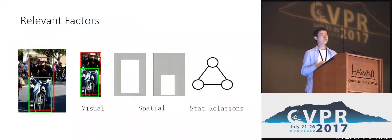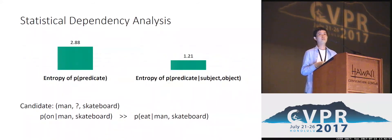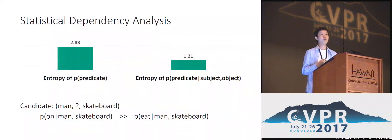In joint recognition, we use three factors. The first factor is the visual appearance, which is the enclosed sub-region of the two objects in the original image. The second factor is the spatial cues, which means the relative locations of the two objects, represented using two binary masks. The third factor is the statistical dependencies among the components of the triplet. To prove this insight, we computed the entropy of P(predicate), as well as the conditional entropy of P(predicate | subject, object). The results are respectively 2.88 and 1.21, clearly showing strong correlations among the components of triplets.